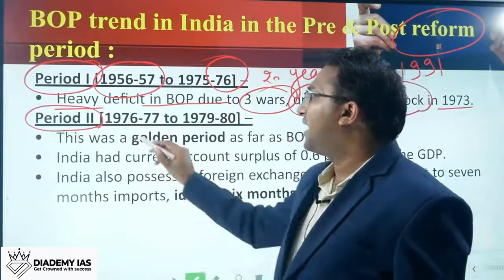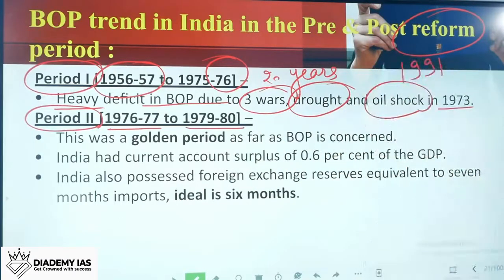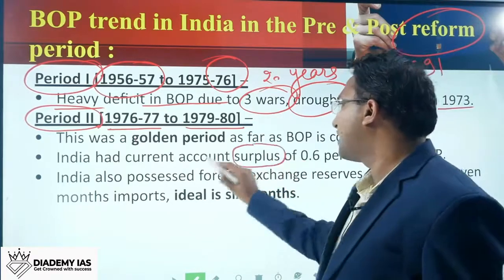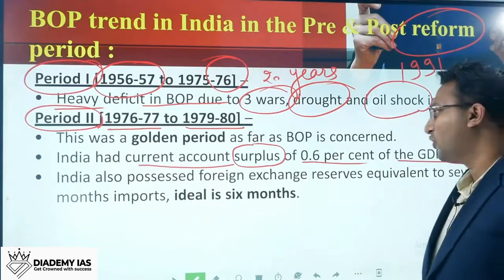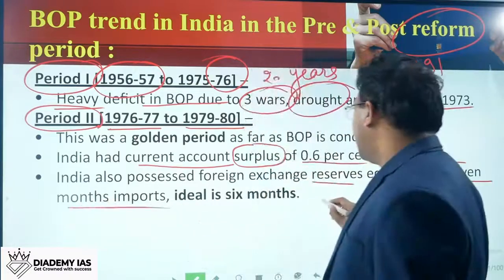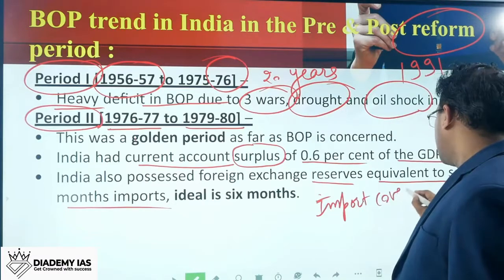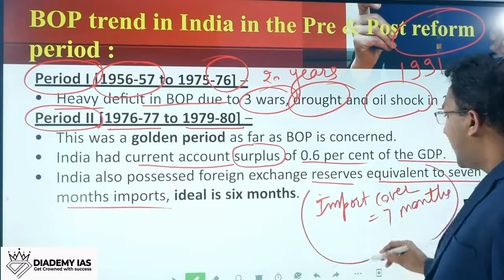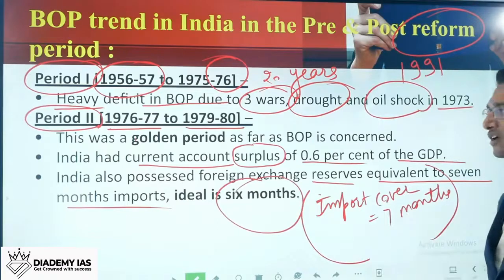Period two started from 1976 and continued till 1980. This was a golden period as far as BOP is concerned. India had a current account surplus of 0.6 percent of GDP, and also possessed foreign exchange reserves equivalent to seven months of import cover. The ideal import cover in India is six months — we will discuss the concept of import cover in a subsequent slide.